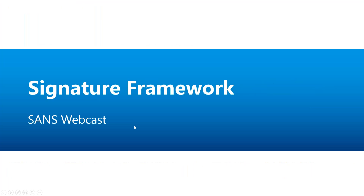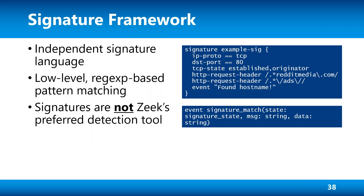I have a few slides on the signature framework. Signature framework is really an extension allowing you to create simple signatures — though nowhere near the functionality of a signature-based IDS. Most commonly, signatures in Zeek are used to enable protocol analyzers or when doing file analysis. The signature syntax has its own simplified language with conditions and an action — you can generate an event, catch it with the signature_match event handler, and write it out to signature.log or notice.log. I have the slides here for later reference.